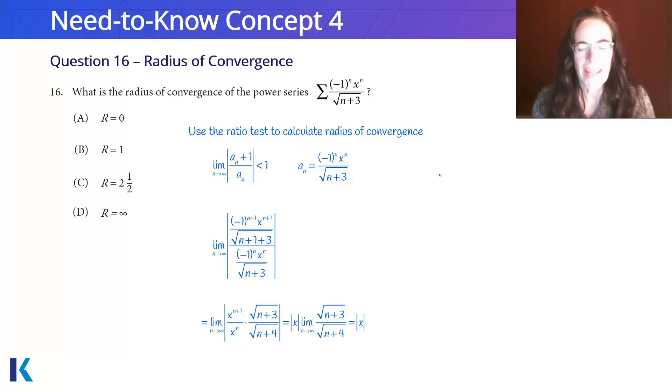I end up with the limit as n approaches infinity is the absolute value of x to the n plus 1 over x to the n times the square root of n plus 3 over the square root of n plus 4.